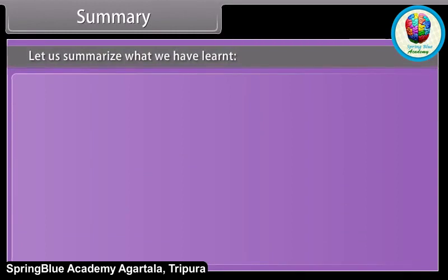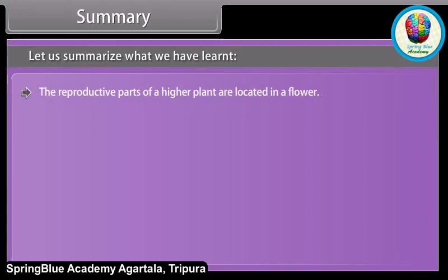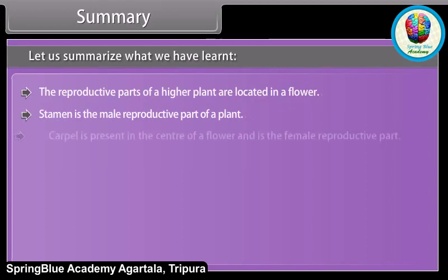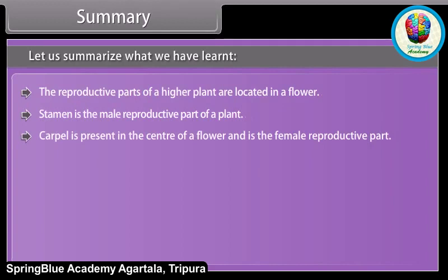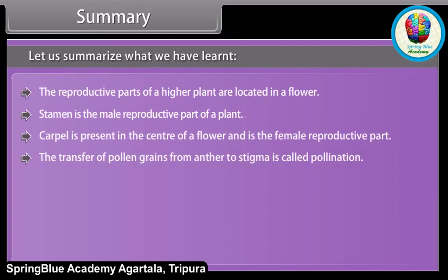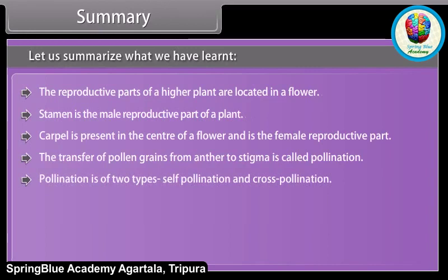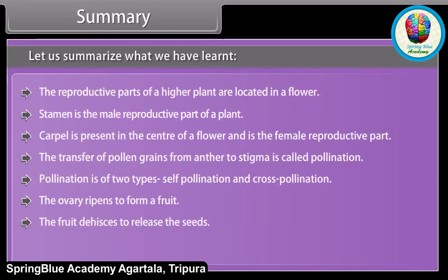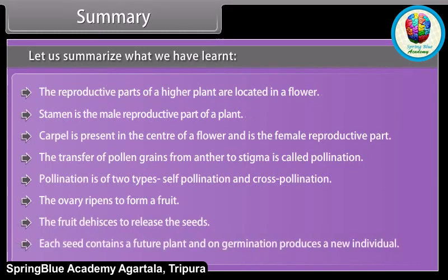Let us summarize what we have learned. The reproductive parts of a higher plant are located in a flower. The stamen is the male reproductive part and the carpel, present in the center of the flower, is the female reproductive part. The transfer of pollen grains from anther to stigma is called pollination, which is of two types: self-pollination and cross-pollination. The ovary ripens to form a fruit; the fruit dehisces to release seeds, and each seed contains a future plant that on germination produces a new individual.